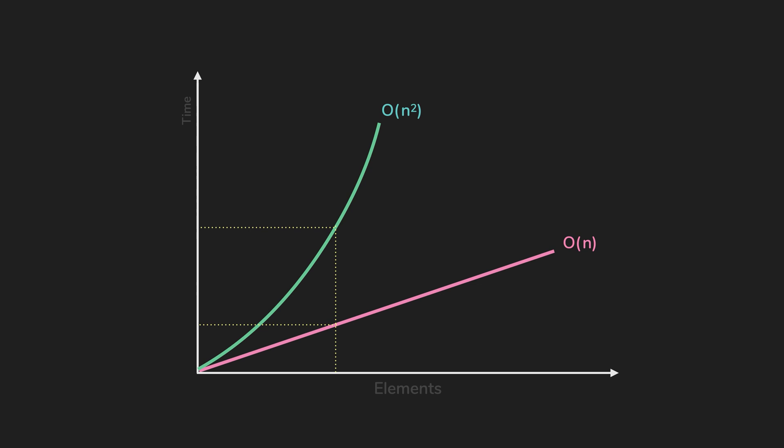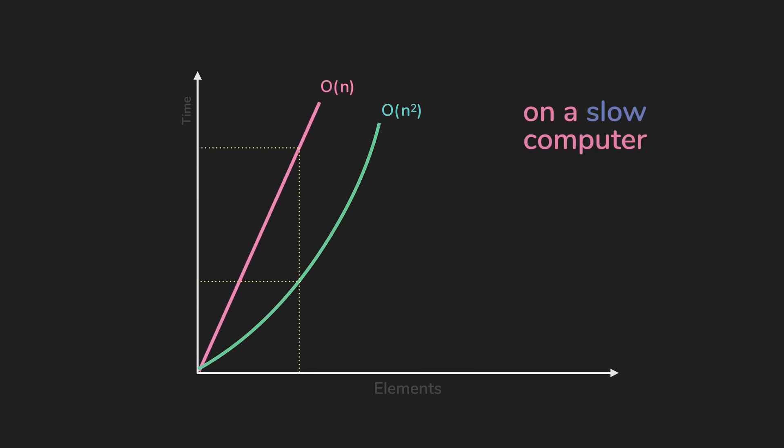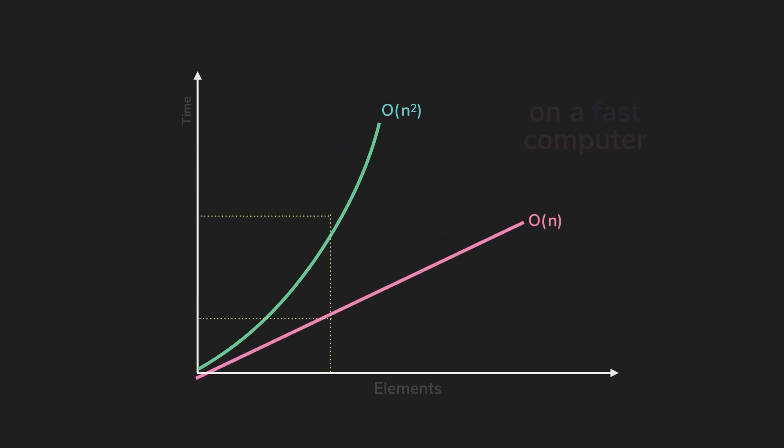But let's say you run linear time complexity algorithm on a really slow computer. Then your plot would look something more like this. It seems here that the quadratic time complexity algorithm is actually faster than the linear. Do you see the problem here?